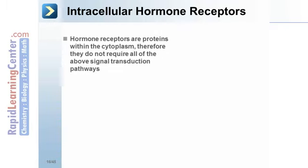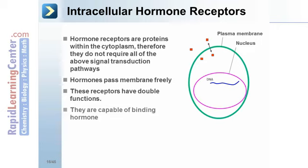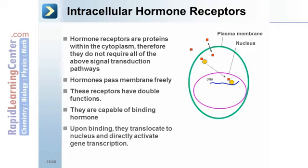Intracellular hormone receptors are proteins within the cytoplasm, and therefore do not require the previous signal transduction pathways. Hormones pass through membranes freely. These receptors have a dual function: they can bind hormones, and upon binding, they translocate to the nucleus to directly activate gene transcription.